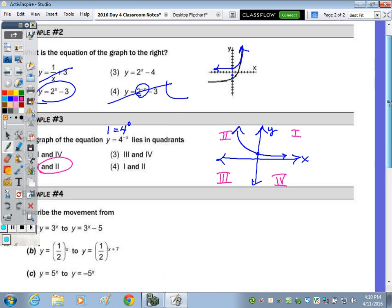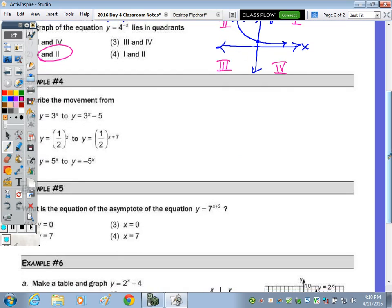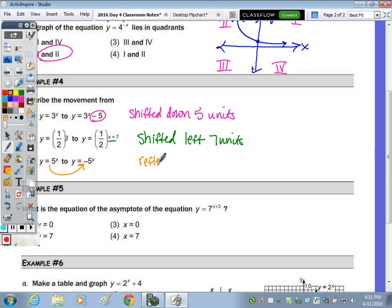Describing the movement, the shifts, the transformations up, down, left, right. From y equals 3 to the x and 3 to the x minus 5, the only difference is this minus 5, so this is a shift down 5 units. The only difference in the next one is they both have one-half as their base. It goes from x to x plus 7, so that's a shift—and the opposite we think right, but it's going left 7 units. In the last one, we go from a positive out front to a negative, so that's going to bring it upside down. This is reflected over the x-axis.